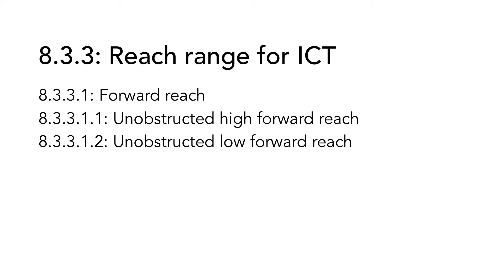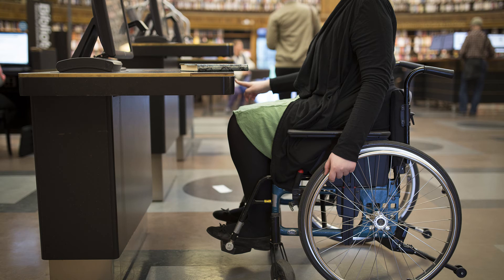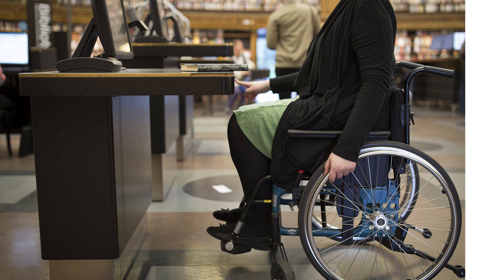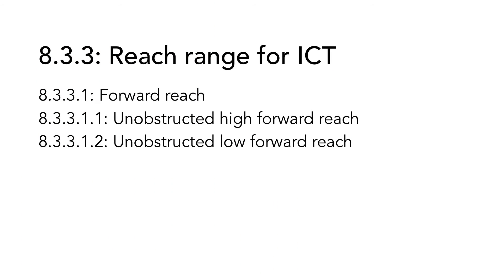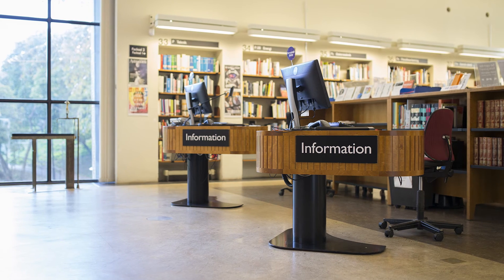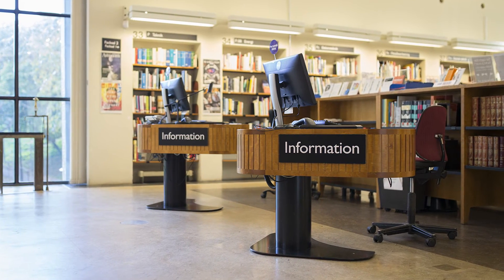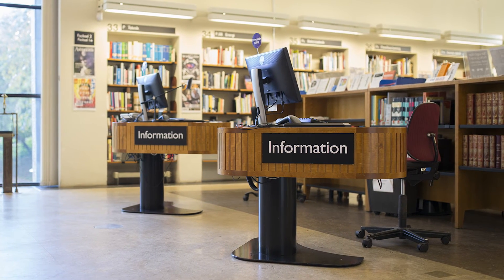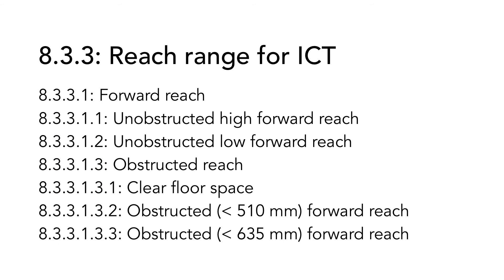A short user, a user with impairments in arms or hands, or a user in a wheelchair must have the possibility to reach the ICT that is built into something. The operable parts must not be placed too high nor too low, and nothing must be in the way — that is why this is called unobstructed reach. If there is something in the way that hinders the forward reach, this is called obstructed reach. If the access space has a barrier or obstruction built into the ICT that hinders access to important controls, it must be possible to come close enough to the ICT with the help of clear floor space under the barrier. There are two different sections on obstructed forward reach depending on the measurements.